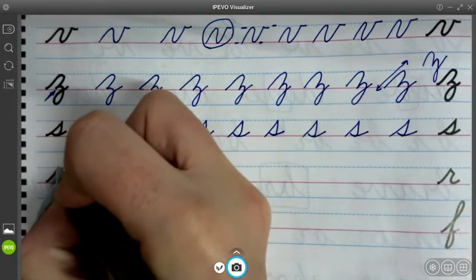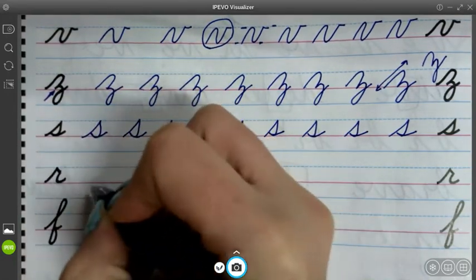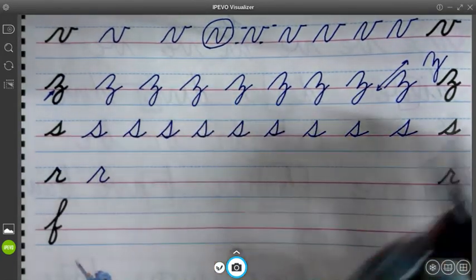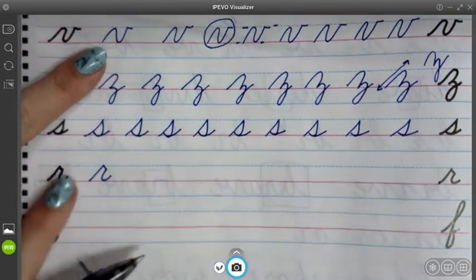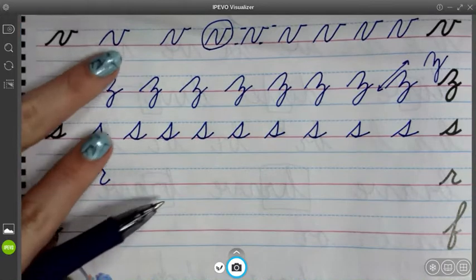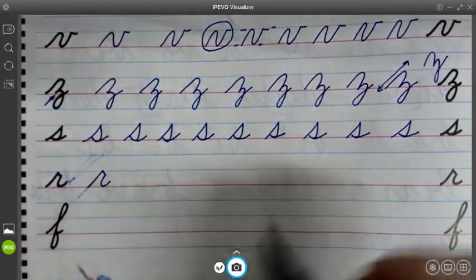When you're ready, let's start R. Diagonal, down and around. So we have the same direction as the Z. It needs to be diagonal, not up and down, not side to side. Diagonal.